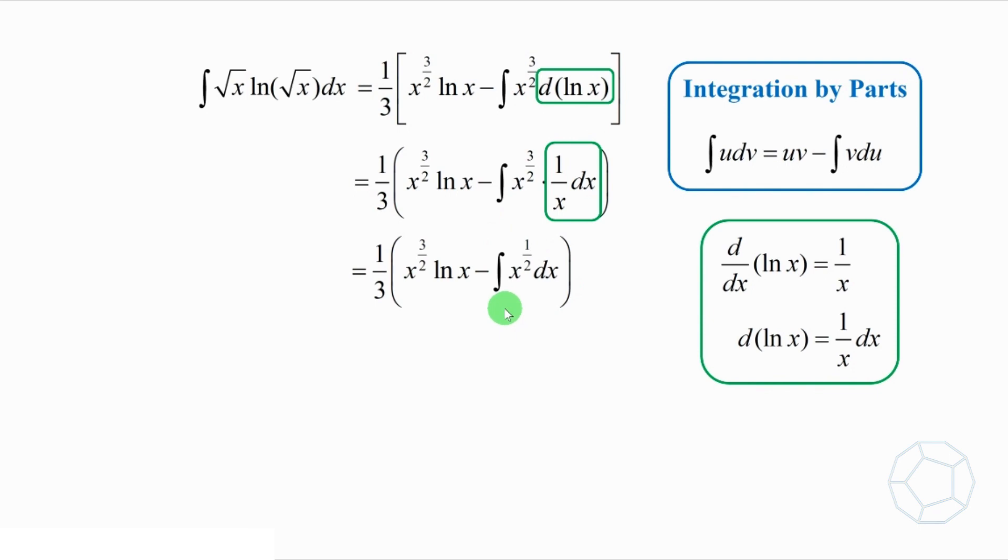Simplify the integrand, we have integrate x to the power of 1 over 2 dx. Now, this integral can be evaluated easily, which is 2 over 3 times x to the power of 3 over 2.